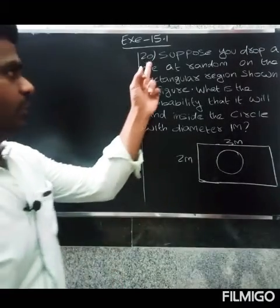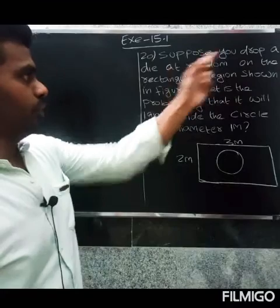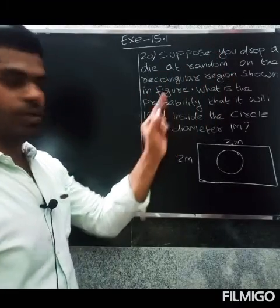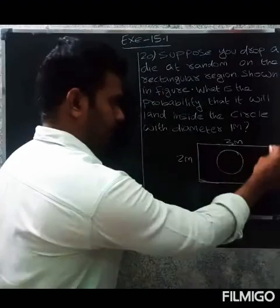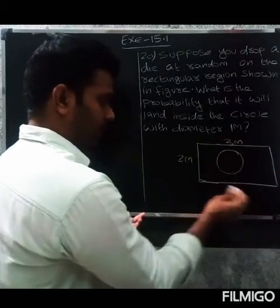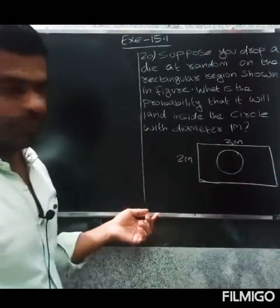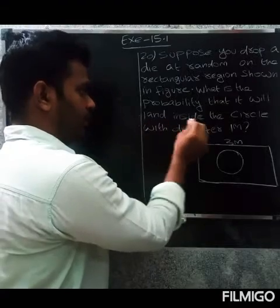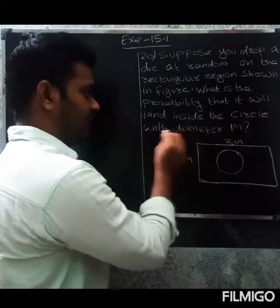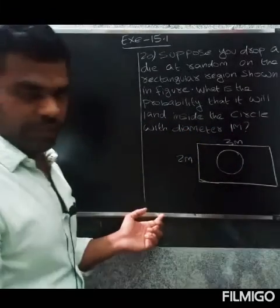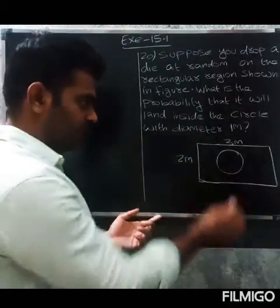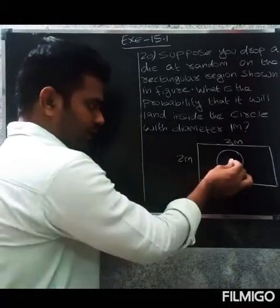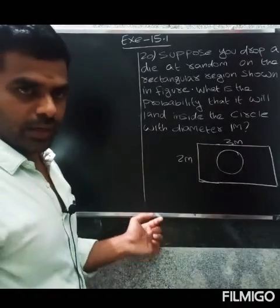Question 20: Suppose you drop a die at random on the rectangular region shown in the figure. What is the probability that it will land inside the circle with diameter one meter? We drop on the rectangular region, and there is a circle inside it. We need to find that probability.